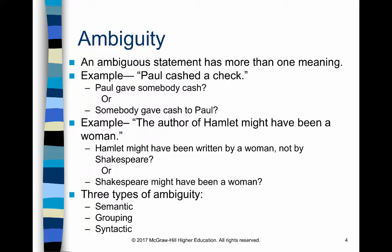'The author of Hamlet might have been a woman.' Again, two separate possibilities: do they mean that somebody other than Shakespeare wrote Hamlet and that author was a woman, or that Shakespeare was actually not a man but was a woman? Hard to tell. Ambiguity comes in three varieties: semantic, grouping, and syntactic.